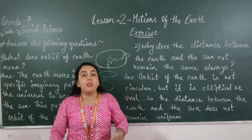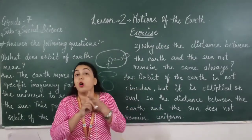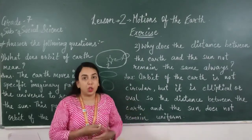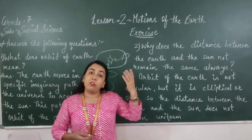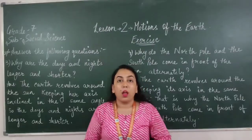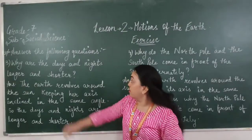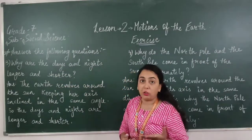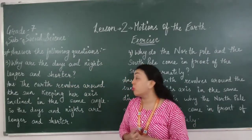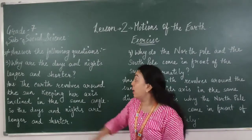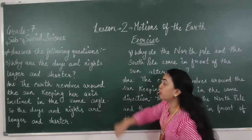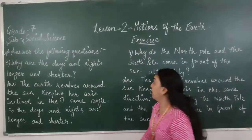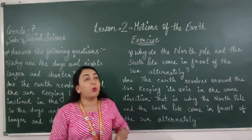Because the orbit of the earth is not circular but overall elliptical in shape. Now moving to our next question: Why are the days and nights longer and shorter? The answer is the earth revolves around the sun keeping its axis inclined at the same angle.